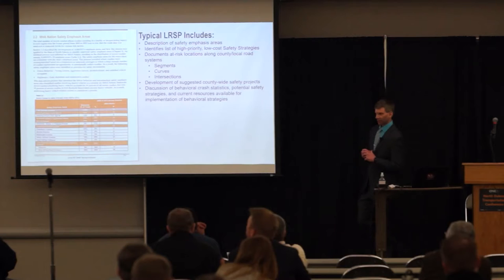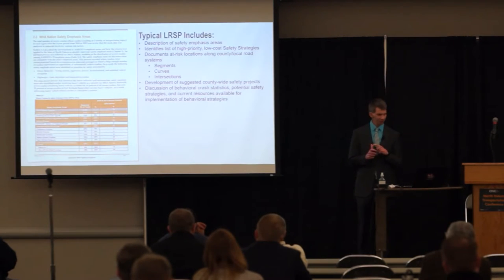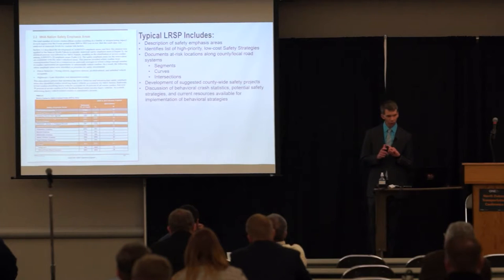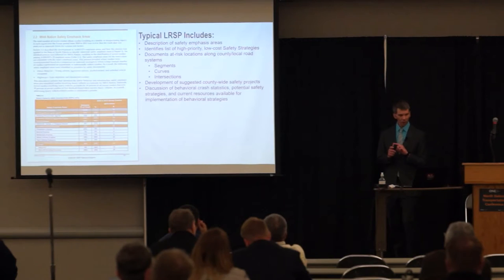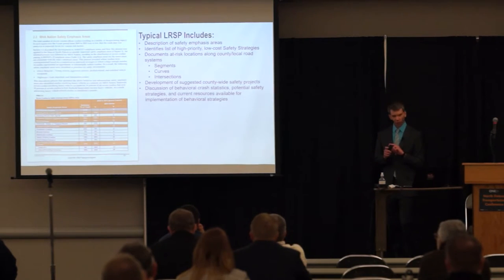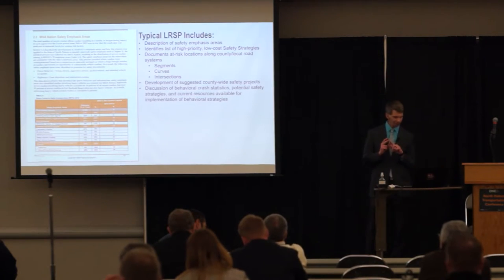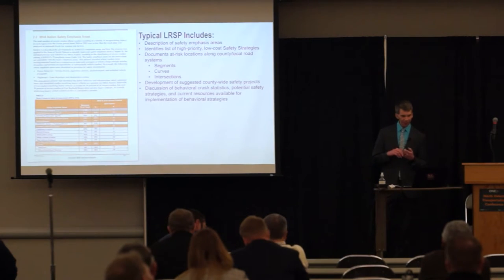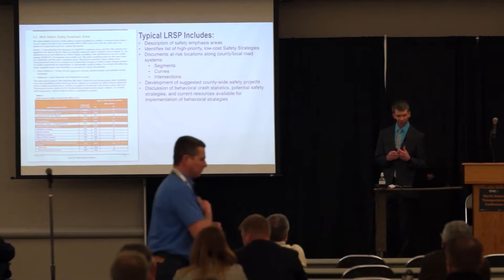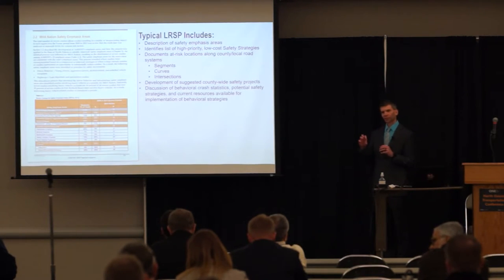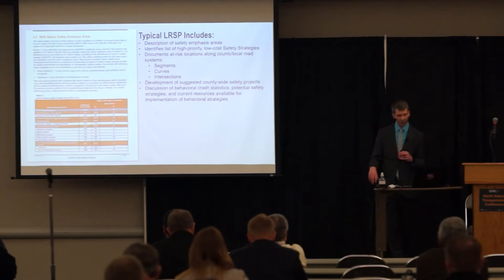Typical information in the local road safety plans includes a description of safety emphasis areas, a list of high-priority low-cost safety strategies, and documents at-risk locations along county and local road systems. This was the systemic analysis that looked at high-risk segments, curves, and intersections. The great thing about the plans is they developed and suggested countywide safety projects. They also discussed behavioral crash statistics, potential safety strategies, and current resources for implementation — so the plans included not just infrastructure but also some behavioral components.